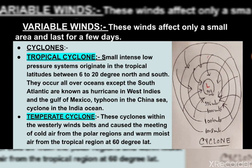Now let us learn about the tropical cyclone. A small, intense low pressure system originates in the tropical latitudes between 6 degrees and 20 degrees north and south. They occur over all the oceans except the South Atlantic and are known by different names: hurricane in the West and the Gulf of Mexico, typhoon in the China Sea, cyclone in the Indian Ocean, and Willy Willies off the coast of northwestern Australia. Before the arrival of a cyclone, the air becomes still with high temperature and humidity. The pressure gradient in a tropical cyclone is extremely steep. The center of the storm is called the eye — a small region of calm and light variable winds, where calm air descends.